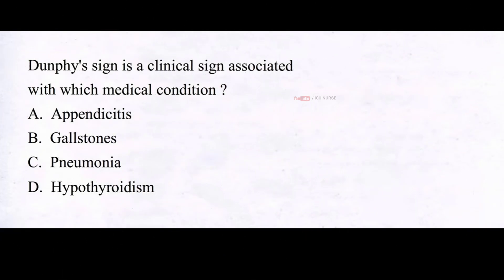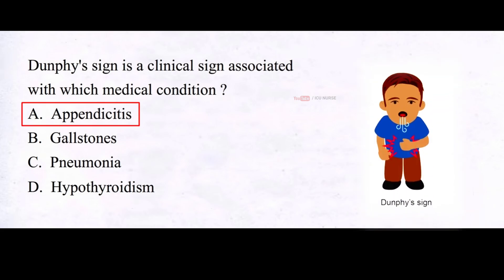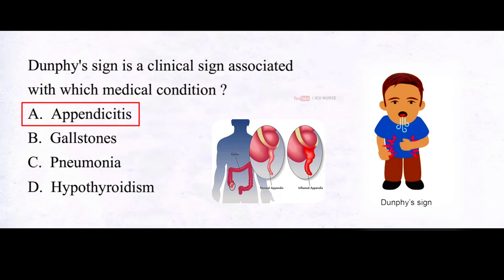Dunphy's sign is a clinical sign associated with which medical condition? The correct answer is A: appendicitis. Dunphy's sign is a medical sign characterized by increased abdominal pain with coughing, and it may be an indicator of appendicitis.